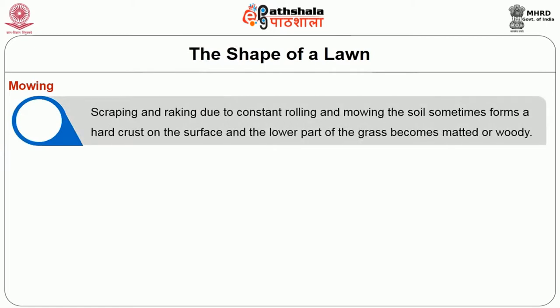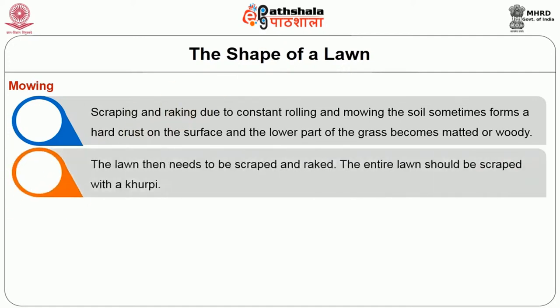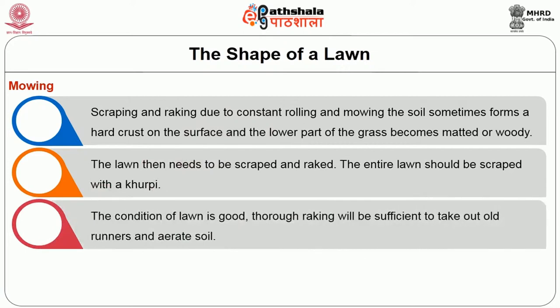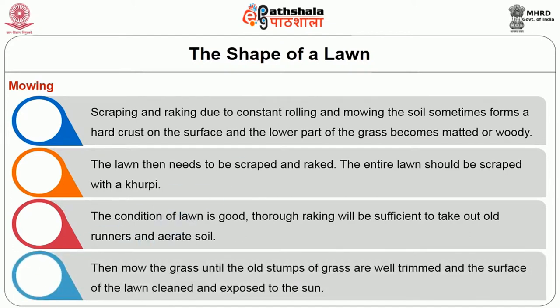A well-kept lawn may not look attractive if edges are not trimmed. The lawn edges must be neat and an edge cutter is helpful for this. Then scraping and raking: due to constant rolling and mowing, the soil sometimes forms a hard crust on the surface and the lower part of the grasses become matted or woody. The lawn then needs to be scraped and raked. The entire lawn should be scraped with a khurpi. Raking will be sufficient to take out old runners and aerate soil. Then mow the grass until the old stems are well-trimmed and the surface of the lawn cleaned and exposed to the sun.